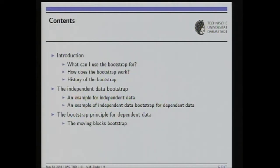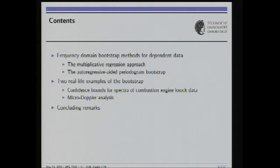Bootstrap techniques are an alternative tool to asymptotic theory, especially when you don't know the distribution of your data and you have a short segment. I'd like to first answer: what can I use the bootstrap for? Then how does the bootstrap work and its history. Then move to independent data bootstrap, then an example of independent data resampling for dependent data, and blocking techniques such as the moving blocks bootstrap. Finally, I'll cover frequency domain bootstrap: the multiplicative regression technique and the autoregressive added periodogram bootstrap.